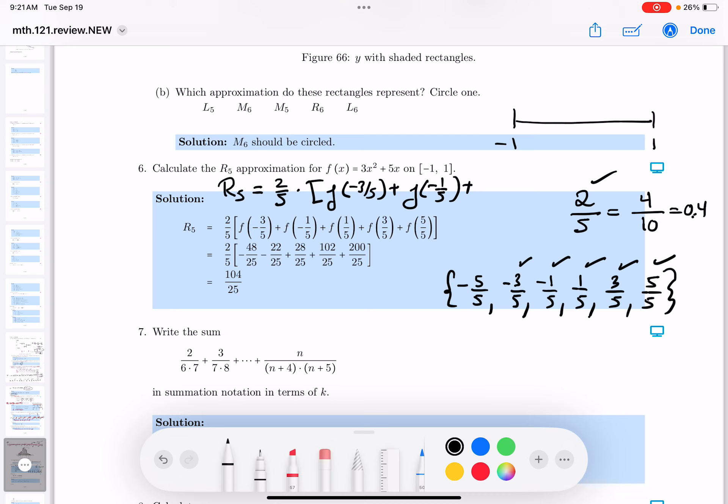There's going to be 5 of those. F of 1 fifth. Plus F of, I'm going to erase that because I don't need that anymore. Otherwise I'll just have to keep moving around. Sorry about that.